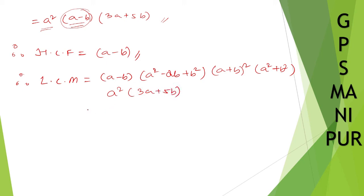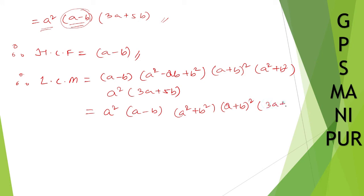From third polynomial, a square and (3a plus 5b) are the remaining factors after (a minus b) is taken out. So arranging: LCM equals a square times (a minus b) times (a square plus b square) times (a plus b) whole square times (3a plus 5b). That's the answer. Thank you so much, we will meet in the next video.